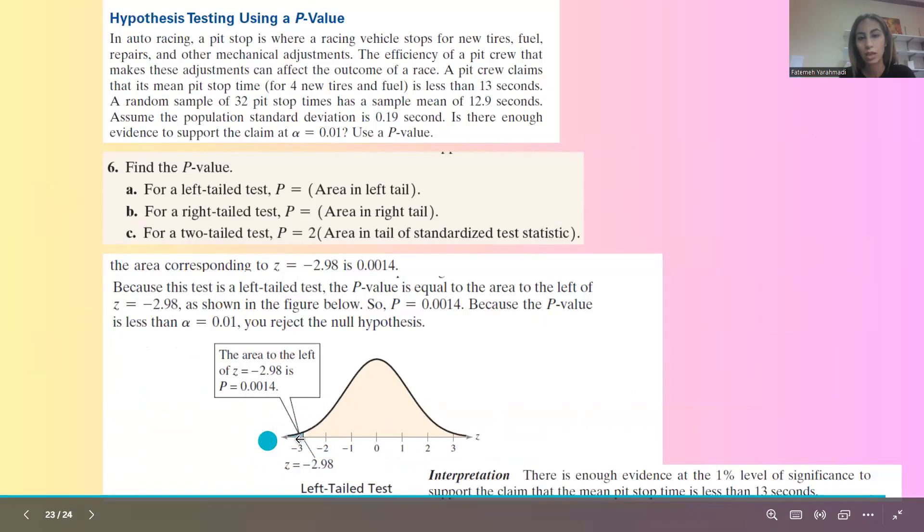The area to the left-hand side of negative 2.98 is 0.0014, which is a very small area. And since it's a left-tailed graph, left-tailed test, the p-value is the same as the area.